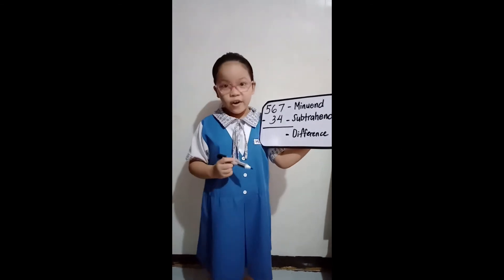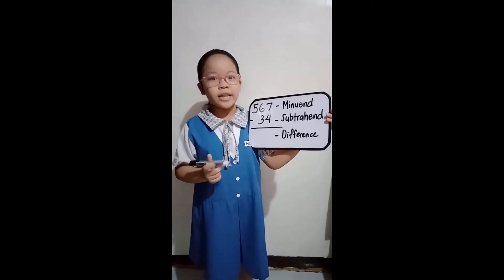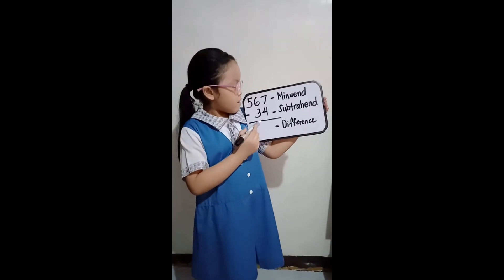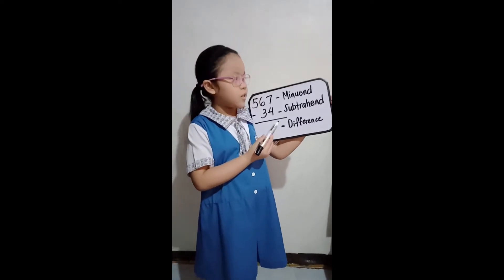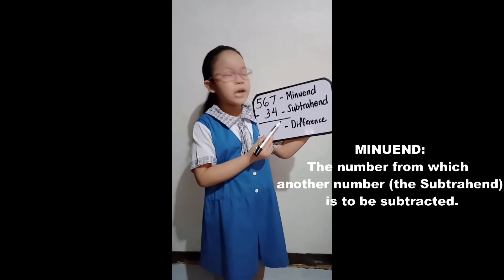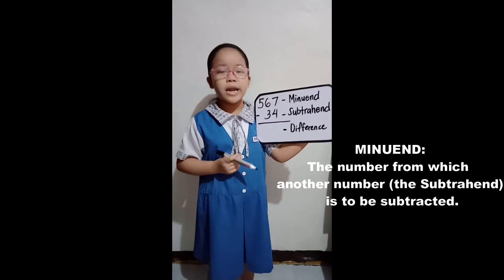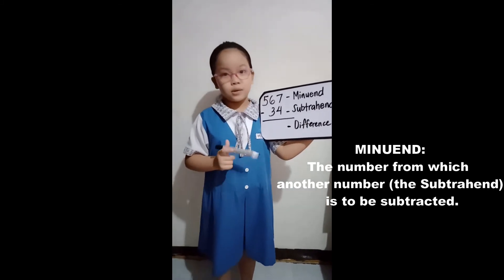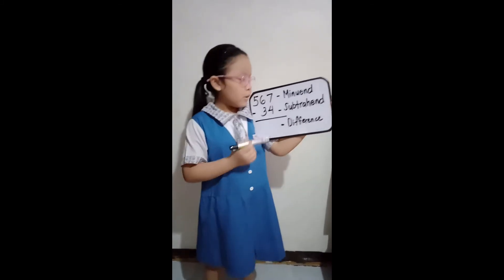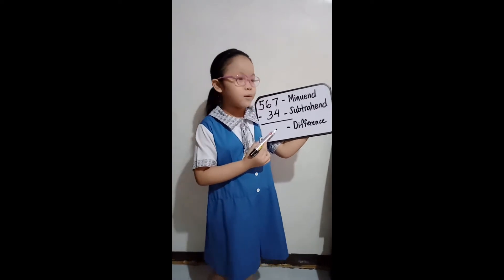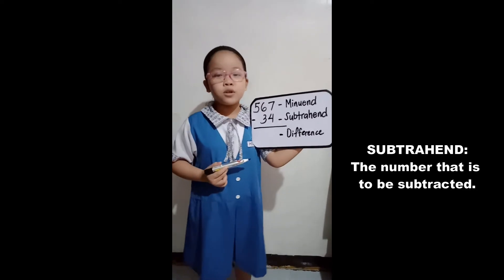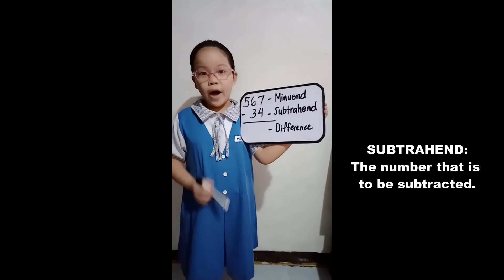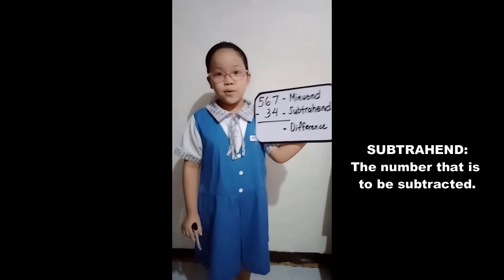But before that, let's identify the following. 567 is the minuend. The minuend is the number above the subtrahend. While 34 is the subtrahend. The subtrahend is below the minuend.